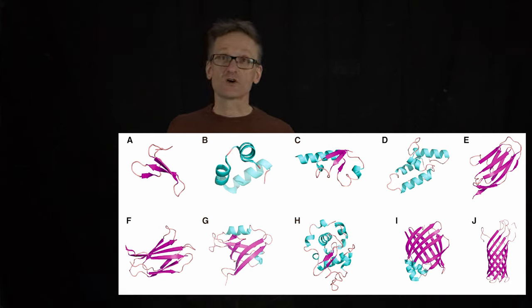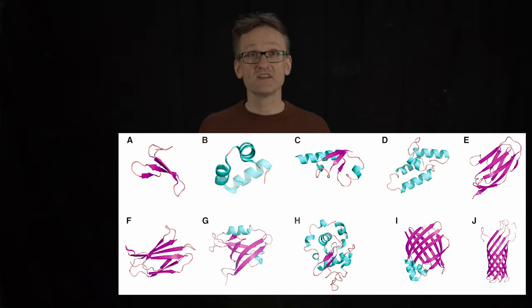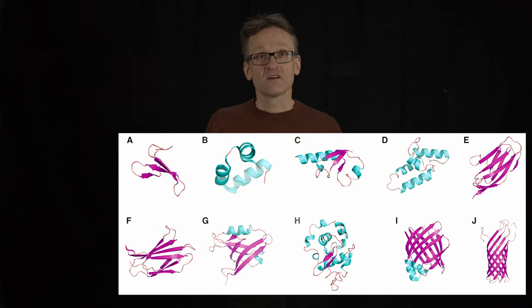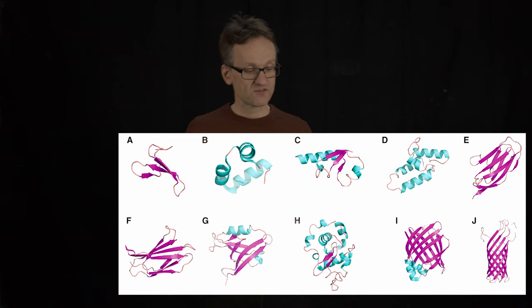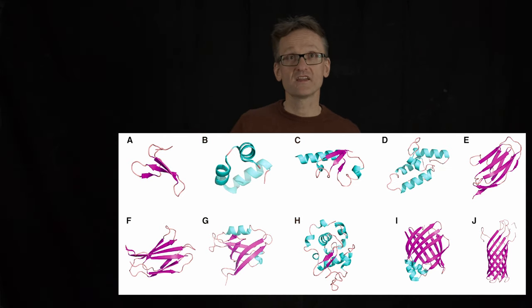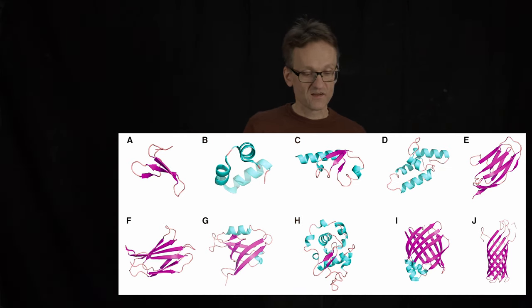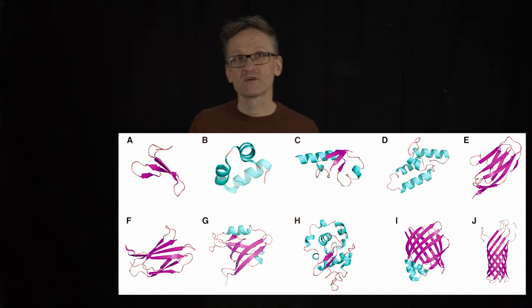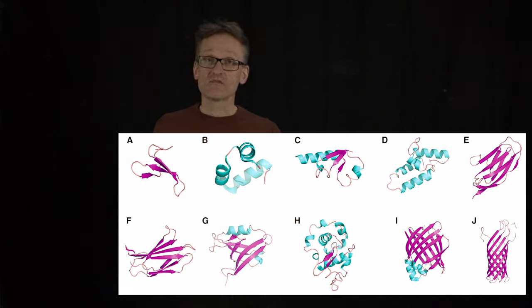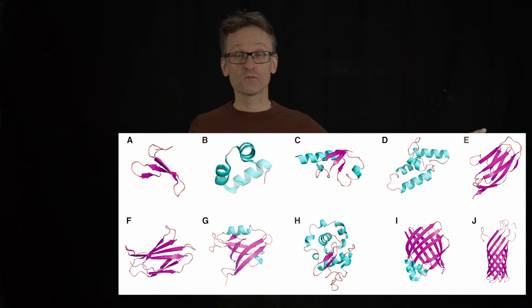Starting from, you've seen a couple of these, this is the villin headpiece. You have some sandwiches there. The last one there is an outer membrane protein, etc. This one is called WW domain, two tryptophans. I'm not going to go through all of them. But these range from very small and stable up to large and more complex.